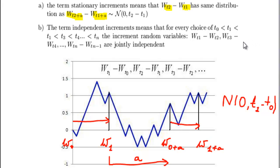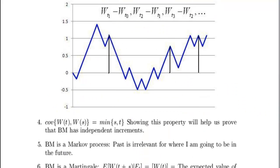Another property is that increments are independent. Increments W(1) minus W(0) and W(1+a) minus W(0+a) are independent. What independence says is that however I moved in one time interval will have absolutely no bearing on how I'm going to move in the other time interval. Let's see some other properties of Brownian motion — we'll briefly enumerate them without actually proving them at this stage.